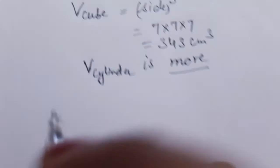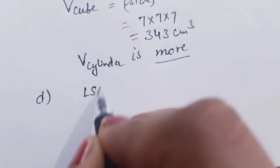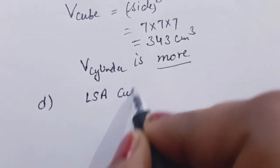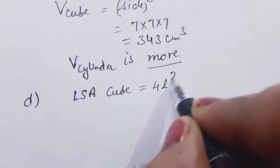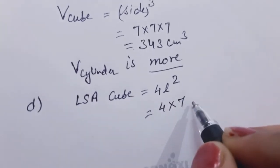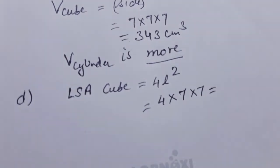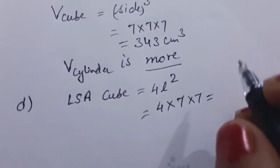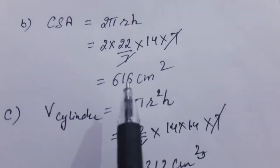Lateral surface area of cube = 4 × side² = 4 × 7² = 4 × 49 = 196 centimeter square. The CSA we found earlier is 616.